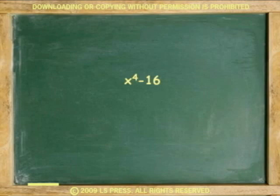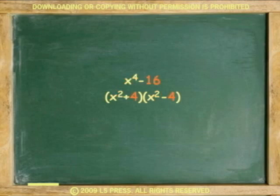For example, factor x to the fourth minus 16. Because it is a difference of two squares, factor into two binomials — one with addition, one with subtraction. The square root of x to the fourth is x squared, and the square root of 16 is 4. The first binomial, x squared plus 4, is a sum of squares and cannot be factored. The second binomial, x squared minus 4, is another difference of two squares, giving the complete factoring: x squared plus 4 times x plus 2 times x minus 2.